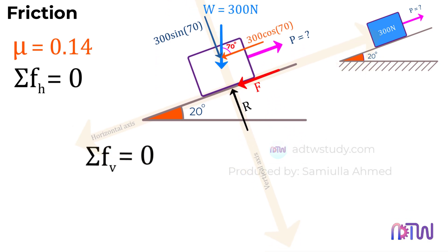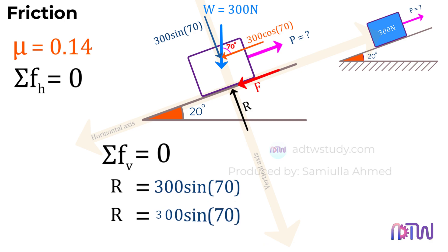Let's sum up the vertical forces. Remember, the sine convention is positive for forces acting upward and negative for forces acting downward along our vertical axis. So, we have the reaction force R acting upward, minus 300 sine 70 degrees acting downward, equal to zero. Rearranging this equation, we get the reaction force R equal to 300 sine 70 degrees, which is 281.9 newtons.